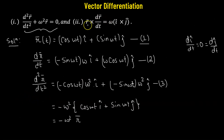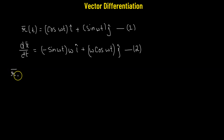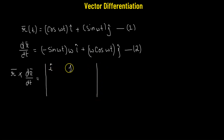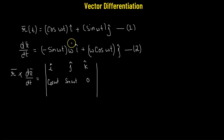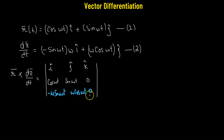For part 2, we take the cross product of r with its first derivative r', using equations 1 and 2. We set up the 3×3 determinant with î, ĵ, k̂ in the first row; the components of r — cos(ωt), sin(ωt), 0 — in the second row; and the components of r' — -ω sin(ωt), ω cos(ωt), 0 — in the third row.